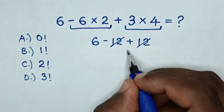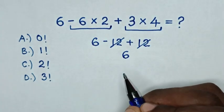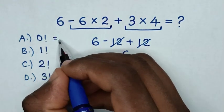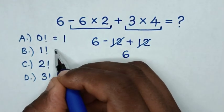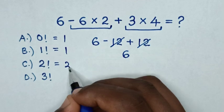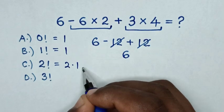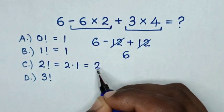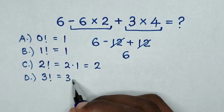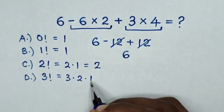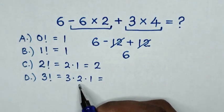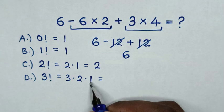Then it will be 6. Now from the multiple choices, 0 factorial is equal to 1, 1 factorial is equal to 1, 2 factorial is equal to 2 times 1, which is equal to 2. 3 factorial is equal to 3 times 2 times 1, which is equal to 6.